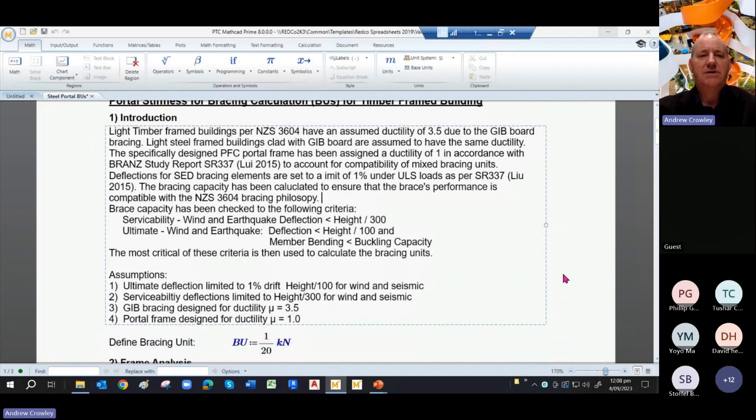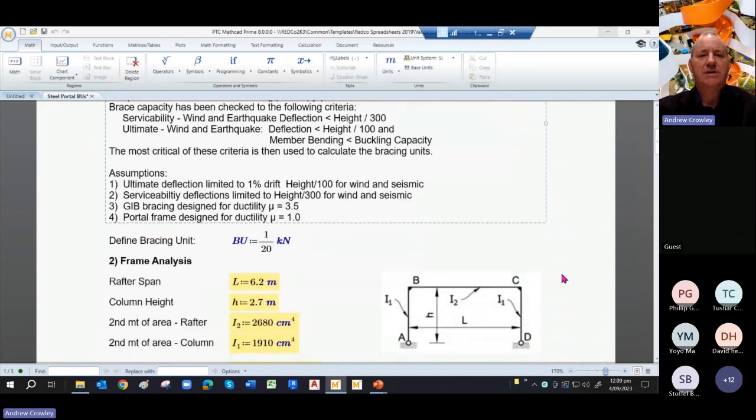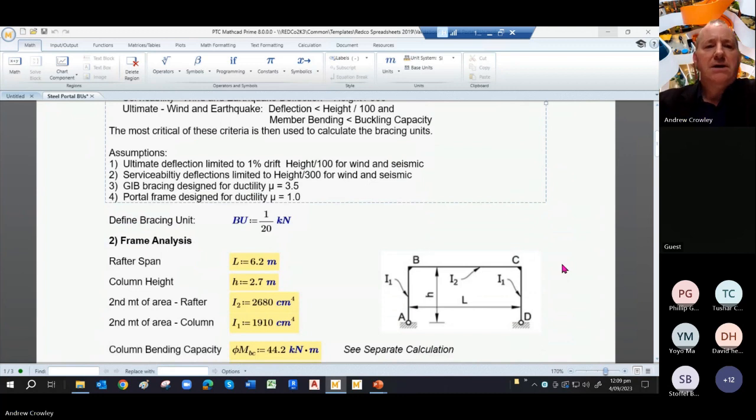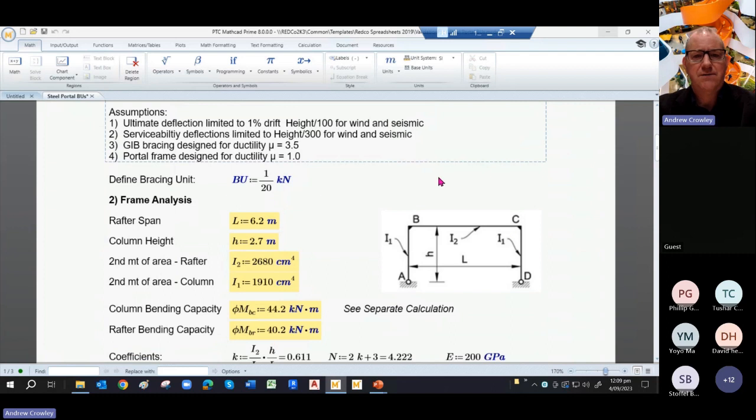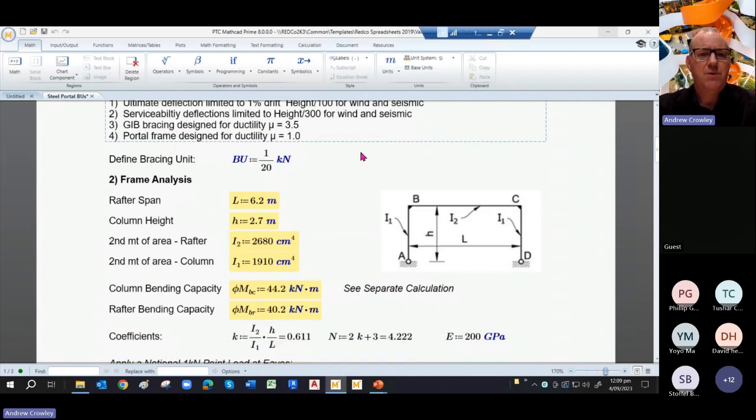So the design philosophy is based on the following assumptions. You have an ultimate deflection of your frame and it's limited to 1% of the storey height, so height over 100 for wind and seismic at ultimate limit state. You then limit the serviceability limit state deflections to height over 300. And then we have our mu factors of 3.5 and 1 for jib board and the portal frame, respectively.